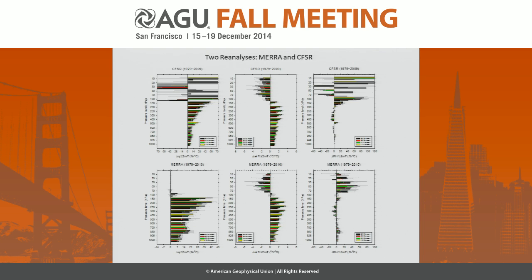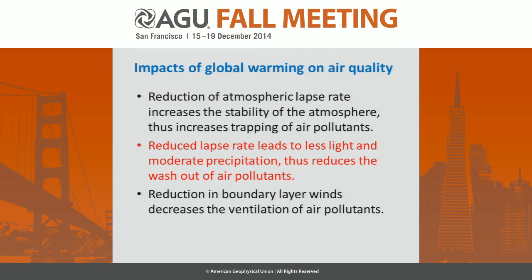A more stable atmosphere would lead to more concentration of air pollutants. Here are similar figures for two reanalysis results showing temperature perturbation and water vapor perturbation. The reanalysis mostly reflects observations, which clearly show higher temperature in the upper and middle troposphere compared to lower troposphere. Different colors represent different latitude zones. The upper reanalysis is CFSR and the lower one is MIRA.